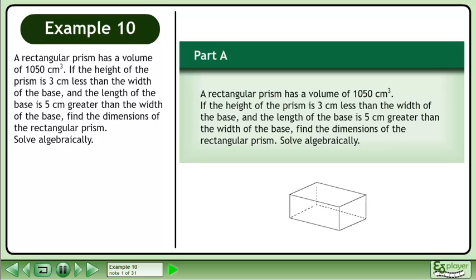A rectangular prism has a volume of 1050 cm³. If the height of the prism is 3 cm less than the width of the base, and the length of the base is 5 cm greater than the width of the base, find the dimensions of the rectangular prism. Solve algebraically.